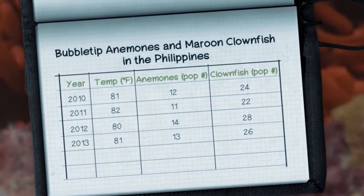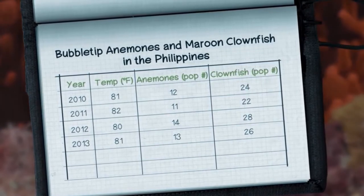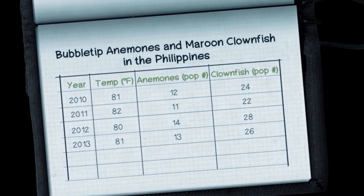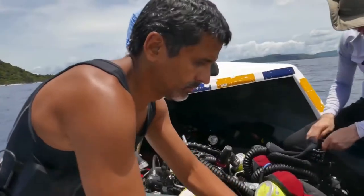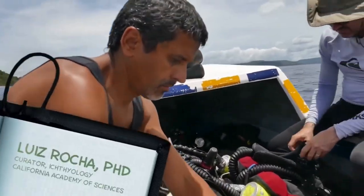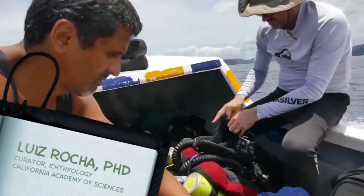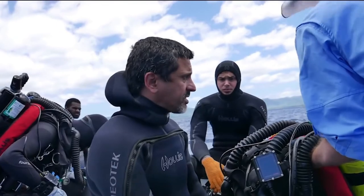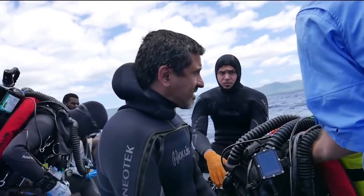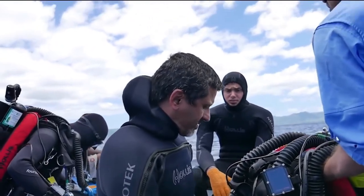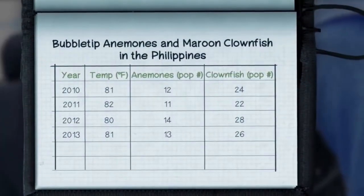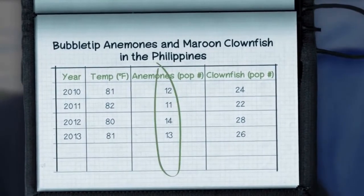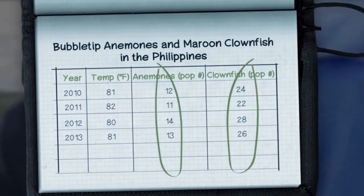Take a moment to pause the video and examine the table. Let's hear from Academy scientist Luis Rocha. When diving around coral reefs, we always find maroon clownfish living in pairs with their bubble-tip anemone hosts. You can see this 2 to 1 population ratio in your field notes.